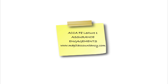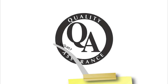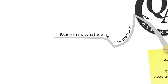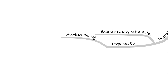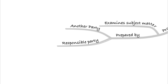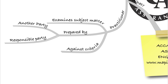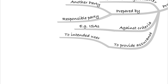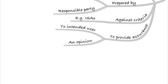This was our introduction to assurance engagements. An assurance engagement is where the practitioner examines the subject matter, which is prepared by another party called the responsible party. If we're thinking about an audit of the financial statements, the responsible party is management — they prepare the financial statements, and the practitioner, the auditor, examines that subject matter against the criteria, such as the standards, to provide assurance to the intended user — the shareholder. That assurance will be in the form of an opinion on the financial statements.